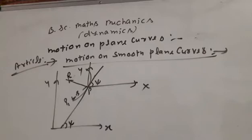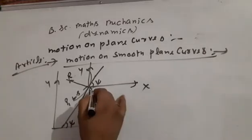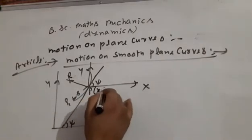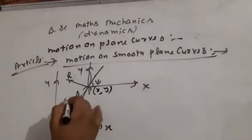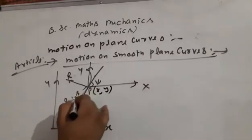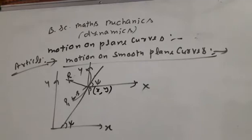The position of a particle at point P at time t has coordinates (x, y), with arc length s. Let v be the velocity at P.